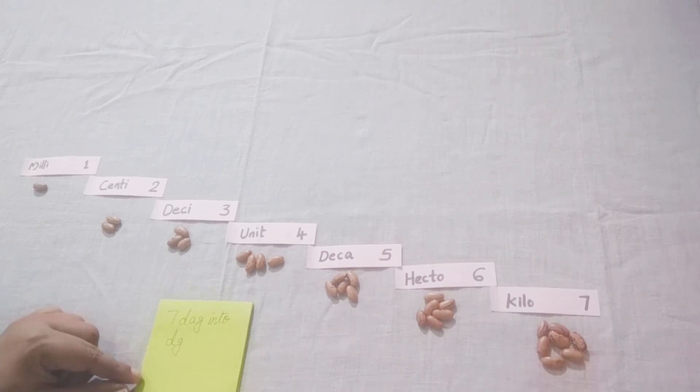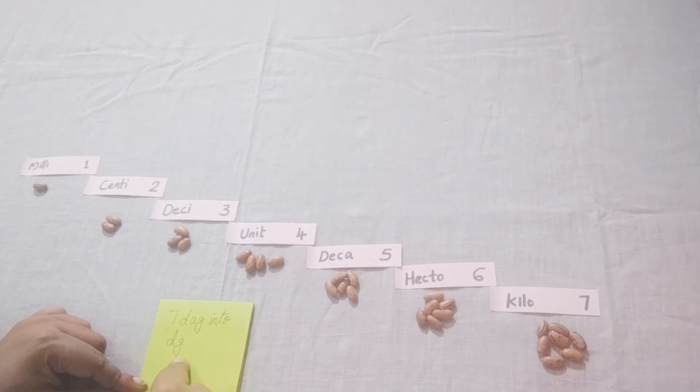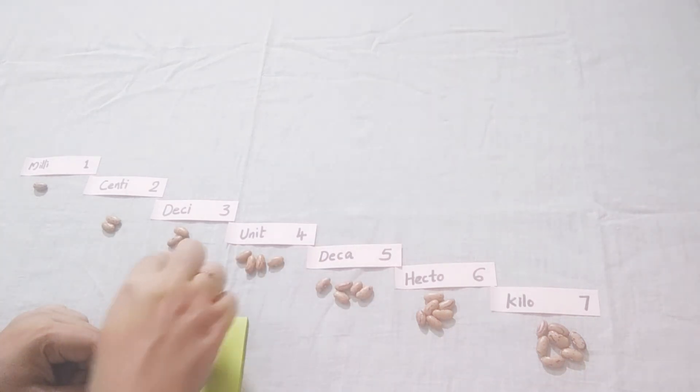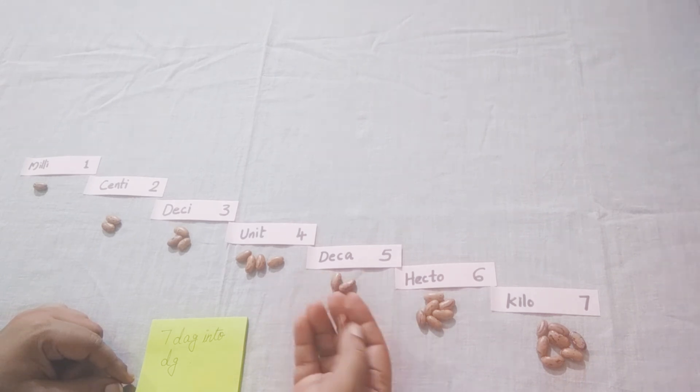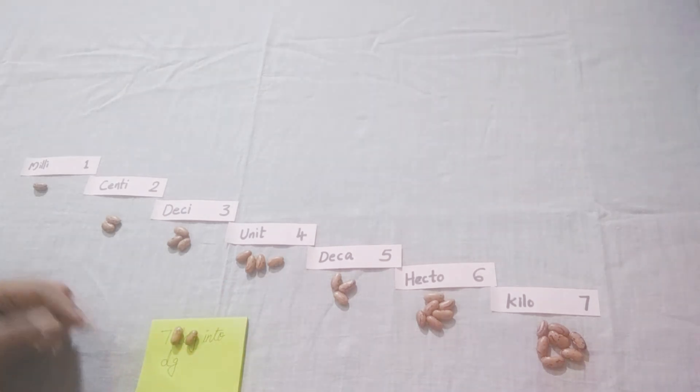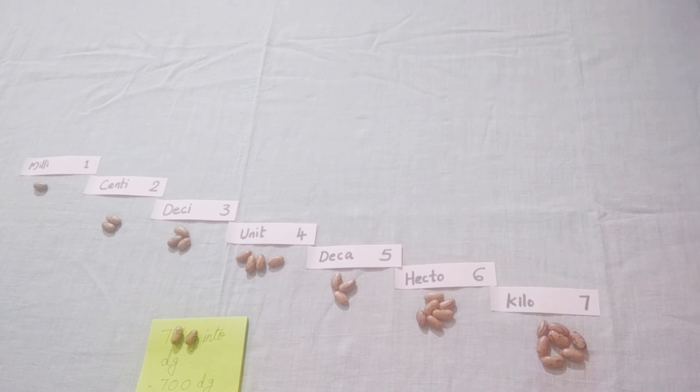Now let's convert 7 decagrams to decigrams. So in decagrams we have five beans, and in decigrams we have three beans. So to make this three five, how many more beans should we add here? Two. That two you add here. Seven, zero, zero is equal to 700 decigrams. 700 decigrams is our answer.